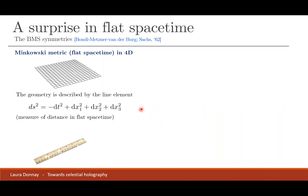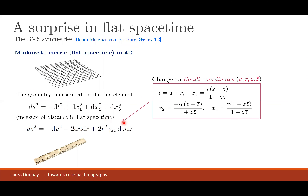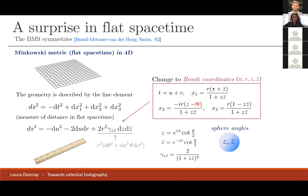Let me start with flat spacetime in four dimensions, namely the Minkowski metric. I will use a convenient set of coordinates called boundary coordinates. These involve a retarded time coordinate U, a radial coordinate R, and stereographic coordinates z and z-bar for the two-sphere, related to the usual theta and phi angles.